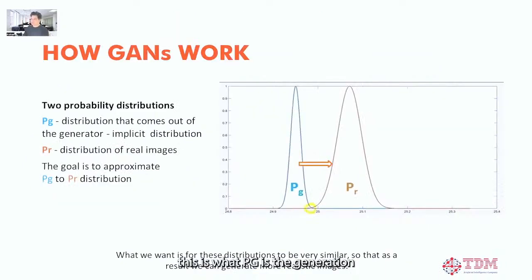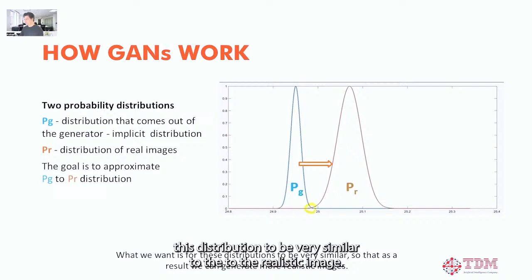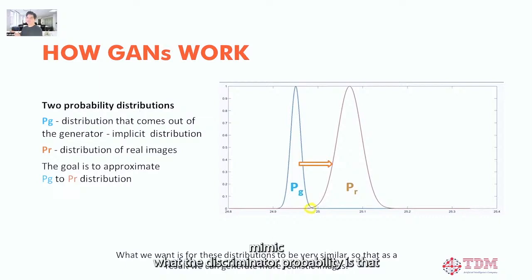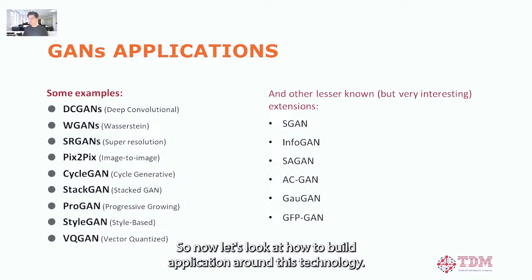In probability theory, pg is the generation distribution and pr is the distribution of the real image. The generator's goal is to make its distribution pg as similar as possible to the realistic pr distribution — to almost mimic what the discriminator's probability is. The goal is to approximate pg to pr distribution.